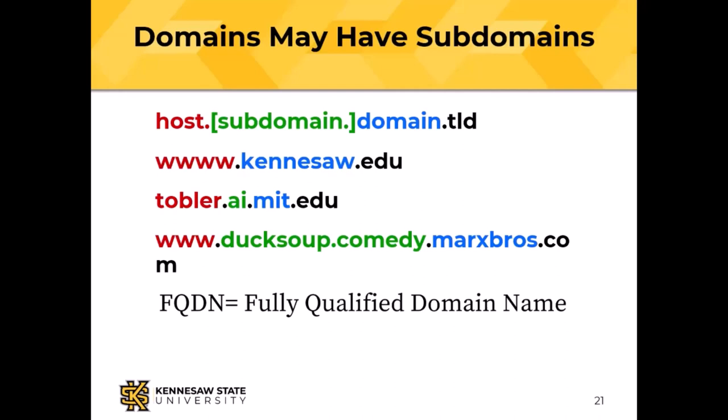The abbreviation FQDN stands for Fully Qualified Domain Name — that means you give all the parts: the hostname, the subdomain if present, the second-level domain, and the top-level domain. If the KSU network system is configured correctly, you should be able to reach www.kennesaw.edu by just typing 'www' — the network configuration says 'I'm in the kennesaw.edu domain, so that must be what you're after.' If it's not what you're after, then you need the fully qualified domain name.